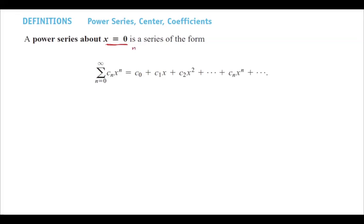So when n is equal to 0, you get c_0 x to power 0. When n is equal to 1, you get c_1 x to power 1. When n is equal to 2, you get c_2 x squared. And then you're adding all of these terms together one by one.